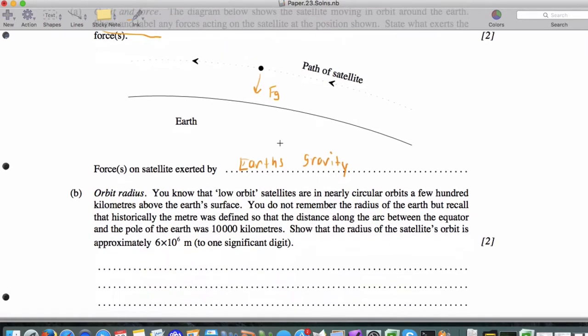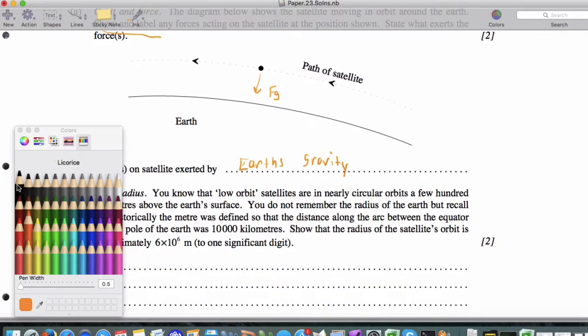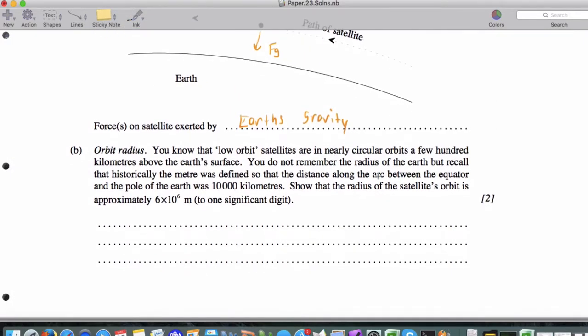Now, you know that low-orbit satellites are in a nearly circular orbit. What do they want us to do? We want to show that the radius of the Earth's satellite orbit is approximately 6 times 10 to the 6th meter. The idea here is lower Earth means only a few hundred kilometers above the Earth. The distance between the equator and the pole is about 10,000 kilometers.